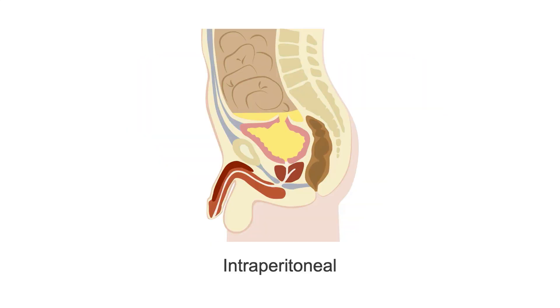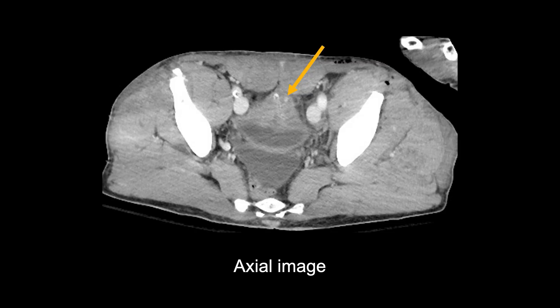With intraperitoneal rupture, the bladder often becomes decompressed after rupture. Since the injury is at the bladder dome, it can be difficult to see on imaging.